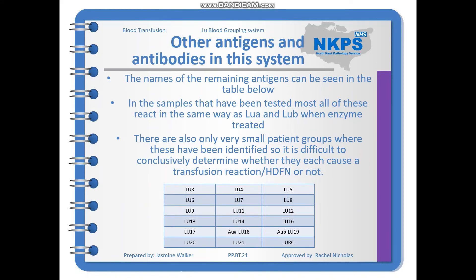Looking at the remaining antigens in this blood grouping system — a table with the remaining antigens is included in the presentation. In the samples tested, most of these antigens react in the same way as LUA and LUB in terms of enzyme treatment. However, there is only a very small patient group for each of these, making it very difficult to conclusively determine whether they each cause transfusion reactions or HDFN.